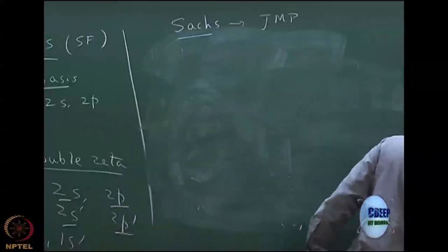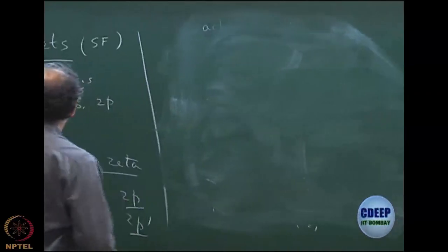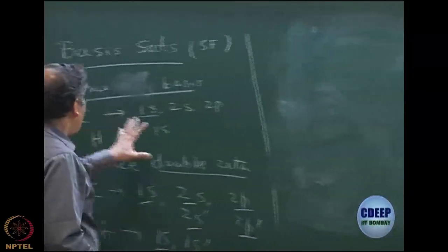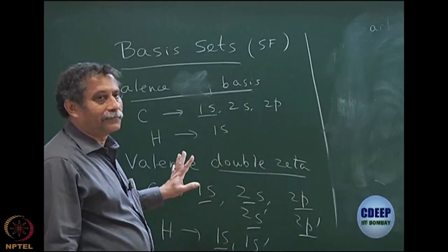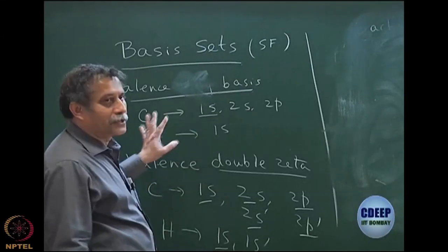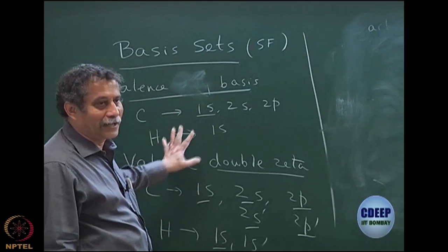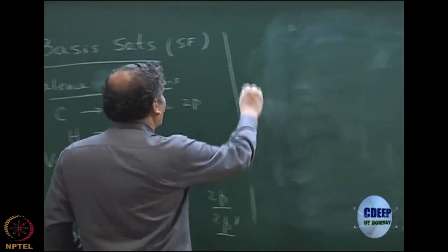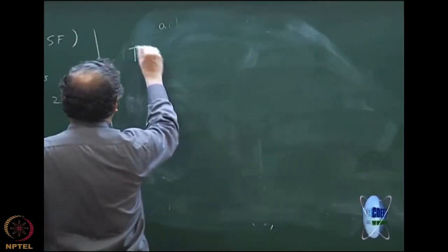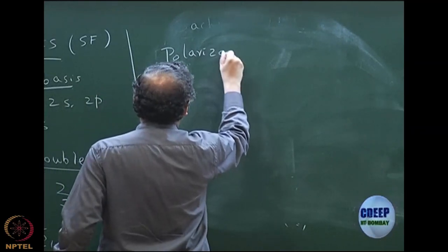We will go forward to say that basis sets with only valence up to valence are not good enough today. You cannot publish any paper with this, so it is very important to realize this. You must use what are called polarization functions. That is very important — polarization functions.